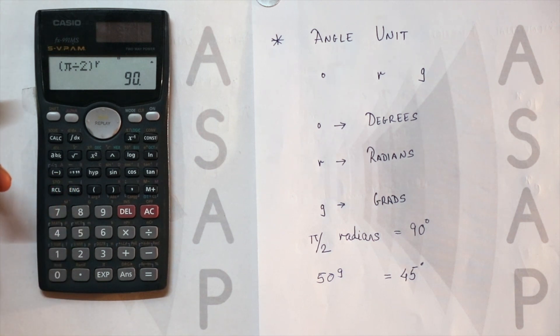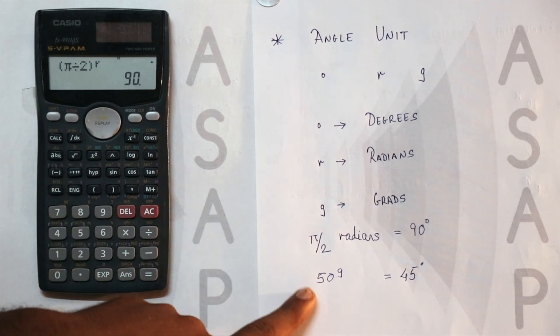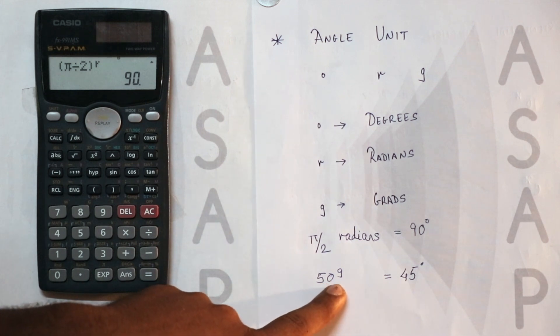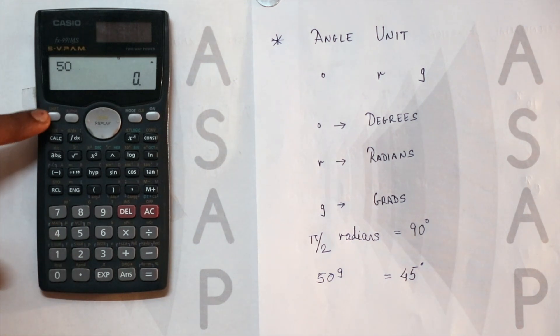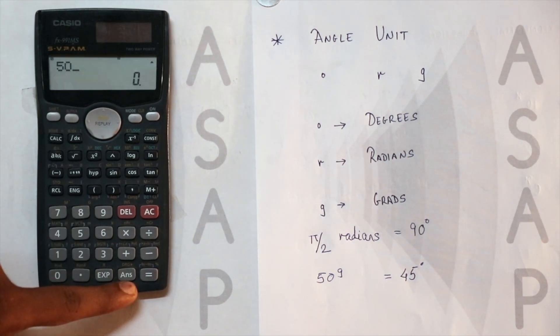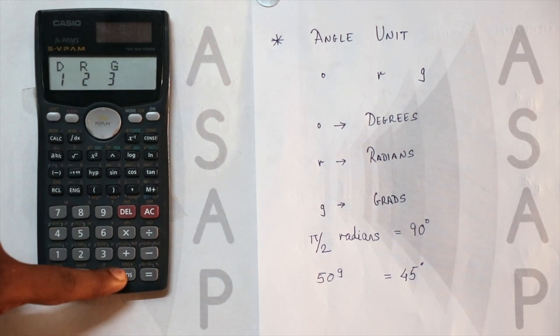Now we'll take another example: 50 grads. First AC, then just 50, then shift, then the answer button where we have DRG. DRG is simply degree, radians, and grads.